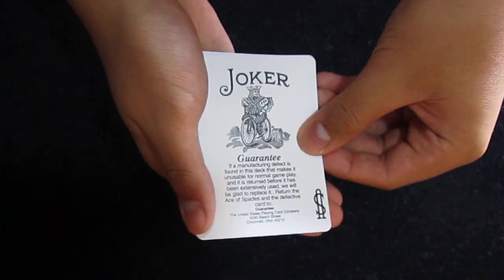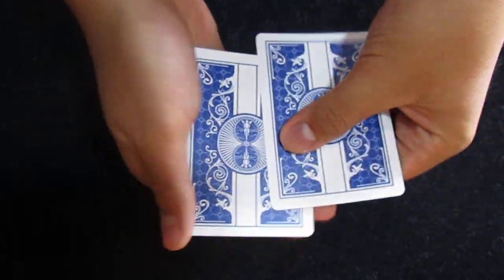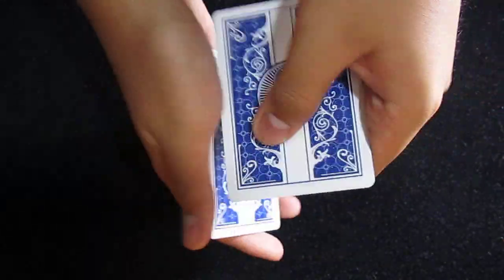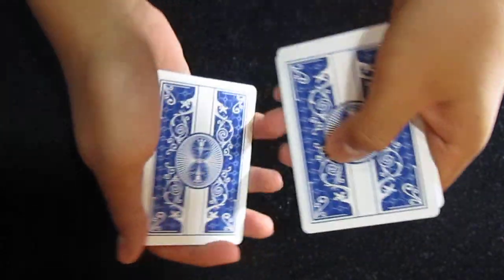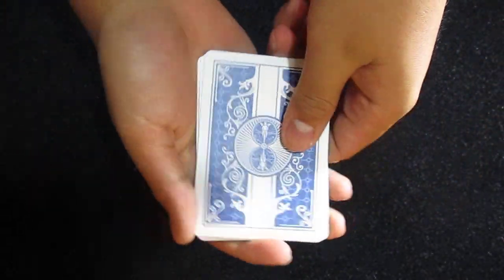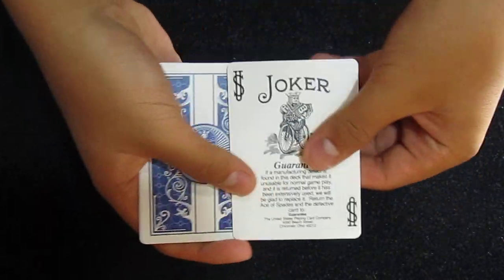Now the problem with this is that this is not my only Guaranteed Joker. In fact, all my cards in the deck are Guaranteed Jokers. Now the problem is, I need my Ace of Spades. So let's see what I can do.